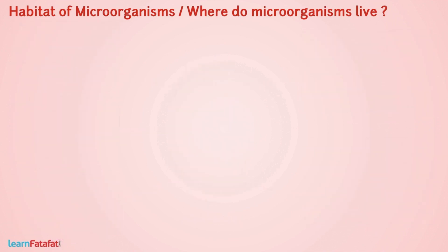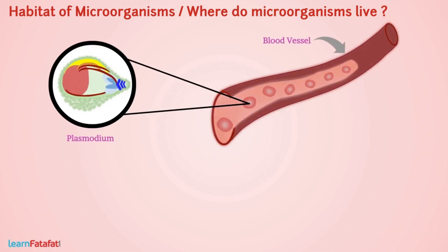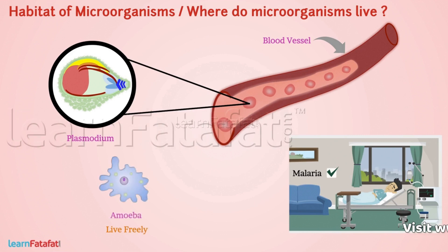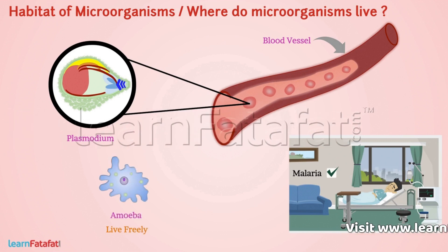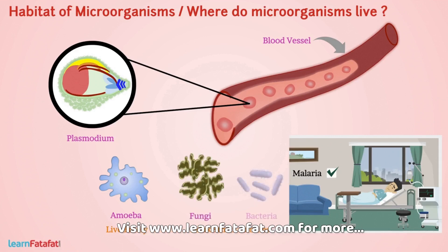Some microorganisms grow on other organisms — for example, plasmodium, which lives in human blood and causes malaria. Some live freely, such as amoeba, and others make their colonies, such as fungi and bacteria.